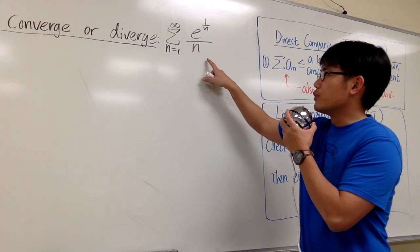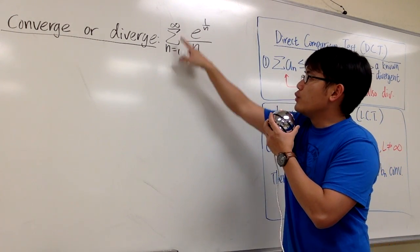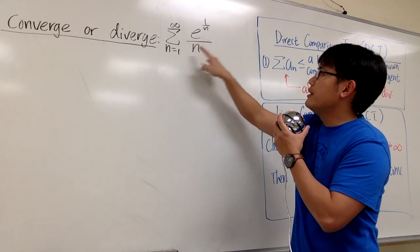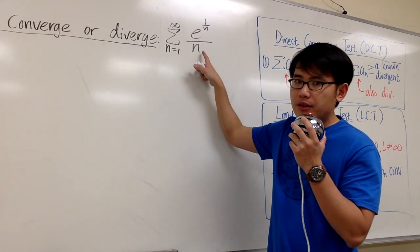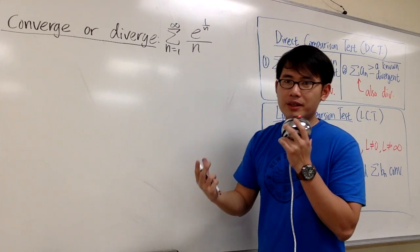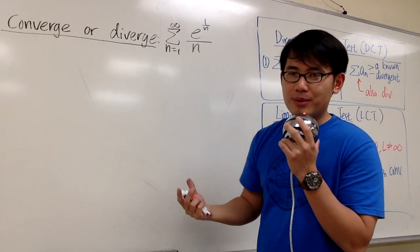We would like to know if this series converges or diverges: sigma as n goes from 1 to infinity, e to the 1 over n, over n. As we can see, we have n on the denominator, so we can compare it with the harmonic series and use a comparison test with that.